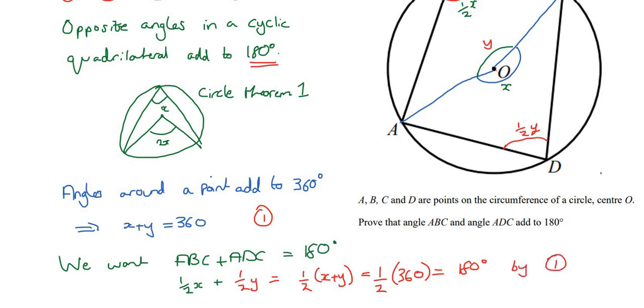So what have we done? We've shown that ABC plus ADC equals 180. And that's exactly what we were trying to prove. So hopefully this makes sense. We've made use of circle theorem one, so make sure you understand that. Thanks for watching. Stay tuned for the next one. Bye bye.